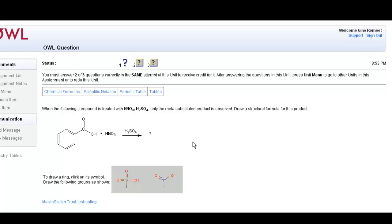When the following compound is treated with nitric acid and sulfuric acid, only the meta-substituted product is observed. What are they talking about? Well, we're going to nitrate this benzene ring. According to those reactions I presented earlier in the video, the question is where is that nitro group going to go?